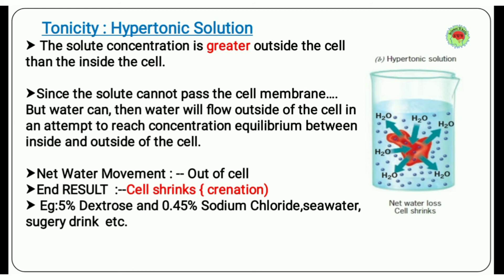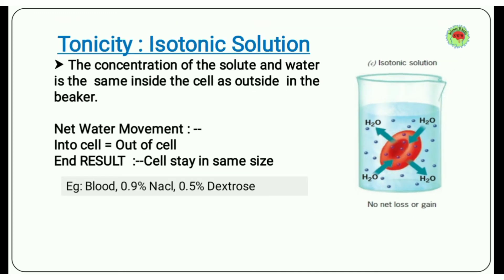Third type: isotonic solution. In an isotonic solution, the concentration of the solute in water is the same inside the cell as outside in the beaker. So in this type of solution, the solute concentration is equal on both sides. There is no need to maintain equilibrium, so there is no net water movement. The net water movement into the cell equals the movement out, so the cell neither shrinks nor swells. Examples of isotonic solutions include blood, 0.9% NaCl, and 0.5% dextrose.